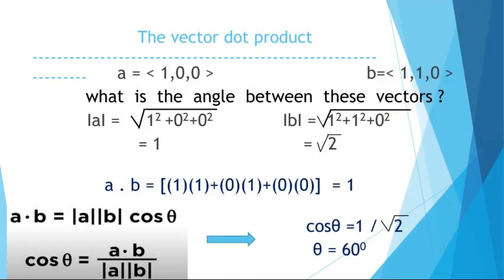Let a = (1, 0, 0) be a vector and b = (1, 1, 0) be another vector. What is the angle between these vectors? |a| = √(1² + 0² + 0²) = 1, and |b| = √(1² + 1² + 0²) = √2. And a·b = (1)(1) + (0)(1) + (0)(0) = 1. Then the formula a·b = |a||b|cos θ gives us cos θ = 1/√2, so θ = 60°.